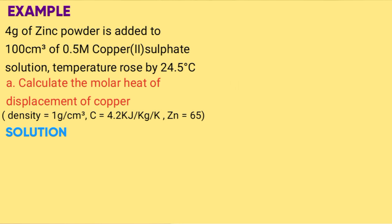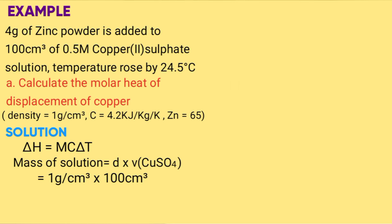Solution: ΔH equals MCΔT. Mass of solution is density times volume of copper sulfate, which is 1 g/cm³ times 100 cm³. Because we are given C in kilojoules per kilogram per Kelvin, we convert the mass obtained of 100 grams to kilogram by dividing by 1000. So we get 0.1 kilogram.